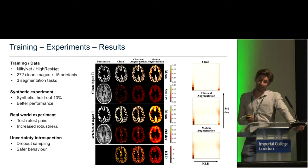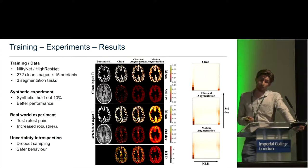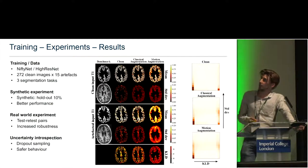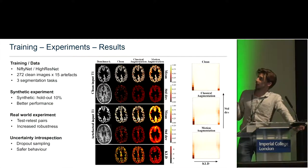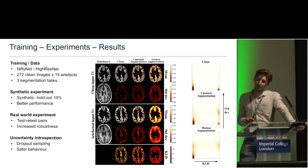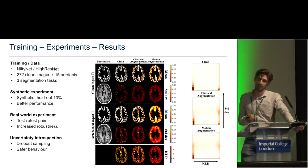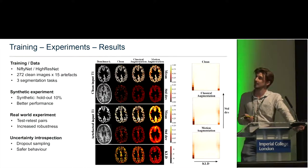Computing the Kullback-Leibler divergence on the output distributions of each model when presented with artifacted and clean data, and associating this with the uncertainty as measured by the standard deviation, we get the histograms on the right. The main takeaway is that the motion-augmented model makes much fewer predictions with high KLD and low uncertainty, indicating generally safer model behavior in the presence of artifacts.